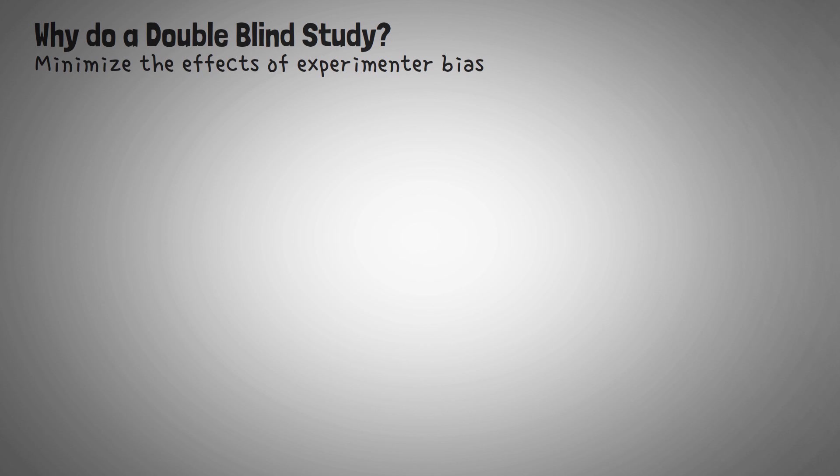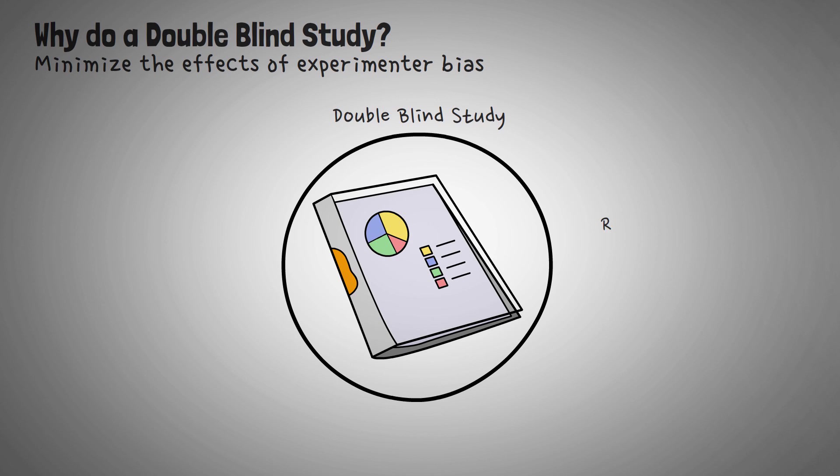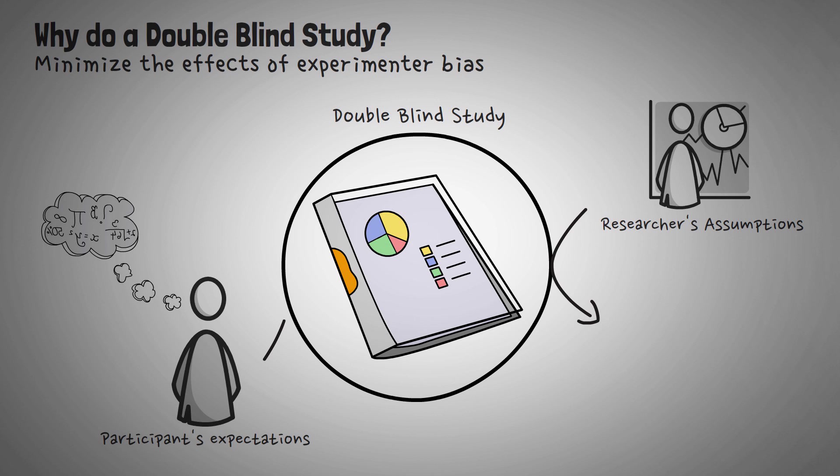So, this brings up the question, why would we do a double blind study? Well, the main purpose of a double blind study is to minimize the effects of the experimenter bias. In other words, the results of the research are less likely to be affected by external factors, such as the experimenters verbally or non-verbally communicating their assumptions about the treatment's efficiency, or maybe the expectations of the participants.